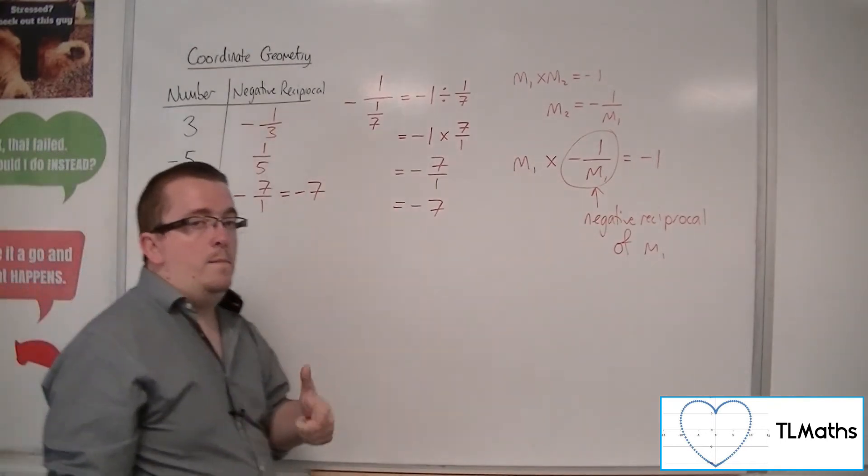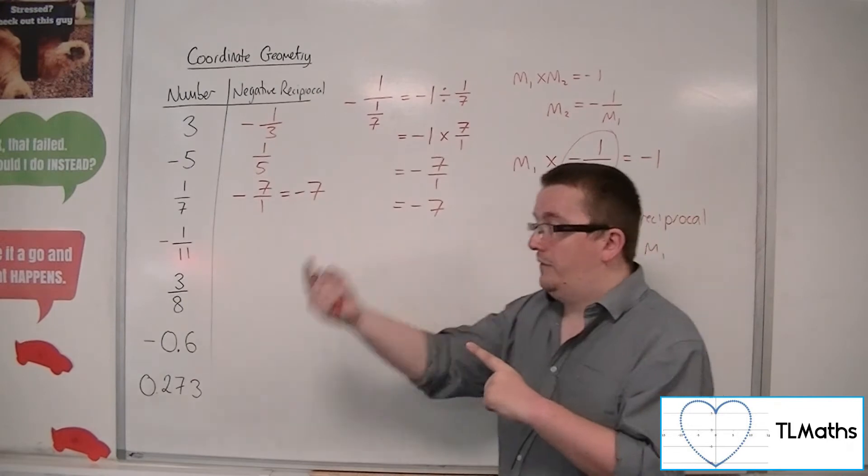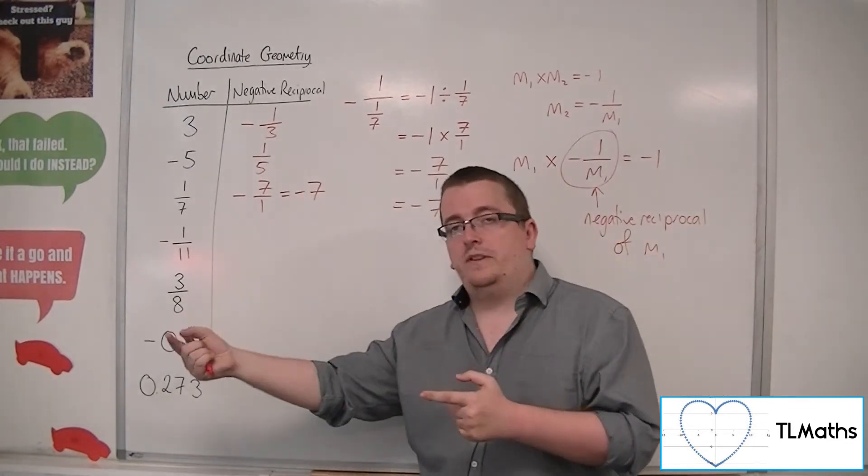So that's why minus 7, the negative reciprocal of minus 7, is 1 seventh. The negative reciprocal of 1 seventh is minus 7.